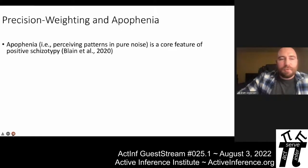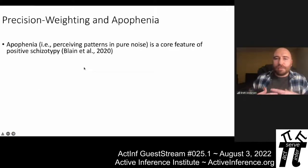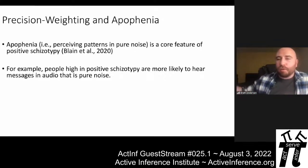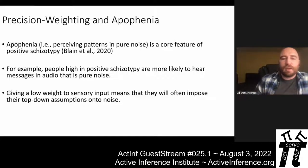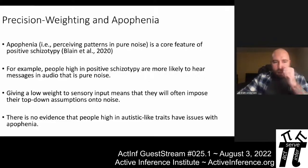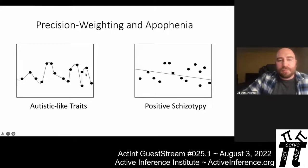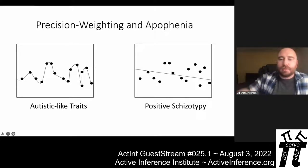Apophenia is perceiving patterns in pure noise, and this is thought to be a core feature of positive schizotypy. For example, people high in positive schizotypy are more likely to hear messages in pure audio noise. Giving a low weight to sensory input means they will often impose their top-down assumptions onto pure noise. There is no evidence that people high in autistic-like traits have issues with apophenia. With autistic-like traits, when presented with pure noise they see no pattern — just randomness. People high in positive schizotypy may attempt to impose a pattern because they're giving more weight to the top-down assumption and less to bottom-up input.